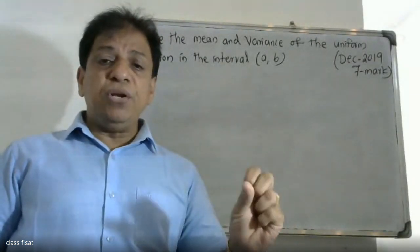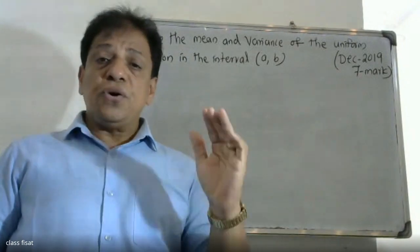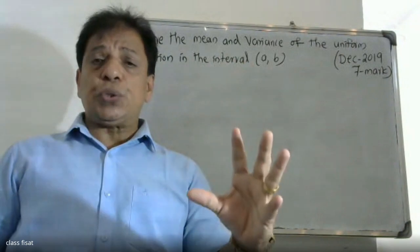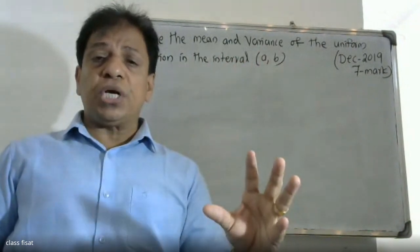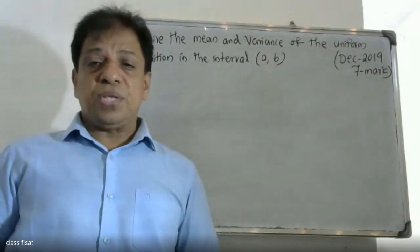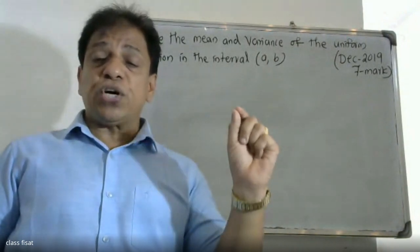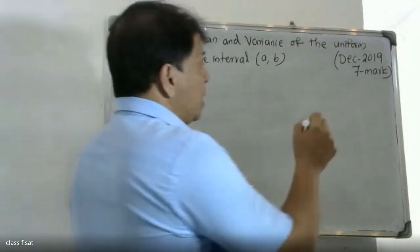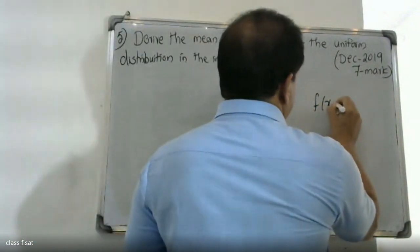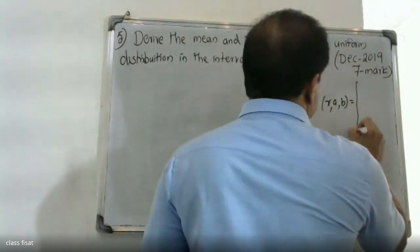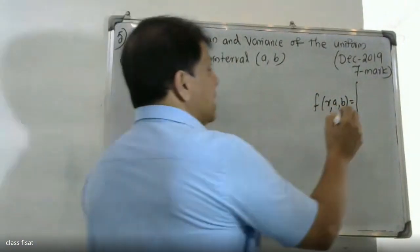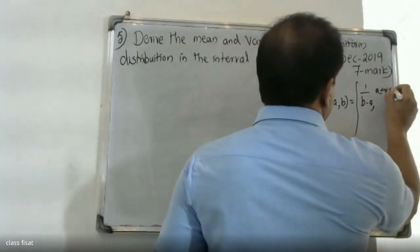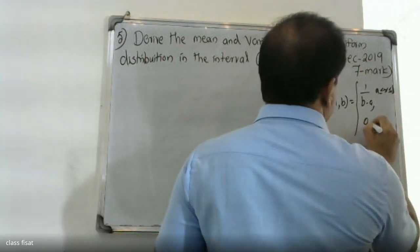Uniform distribution — mean and variance. A continuous random variable X is said to have uniform distribution on the interval a, b if the probability density function f(x; a, b) is equal to 1 by (b minus a), for a less than or equal to x less than or equal to b, and 0 otherwise.